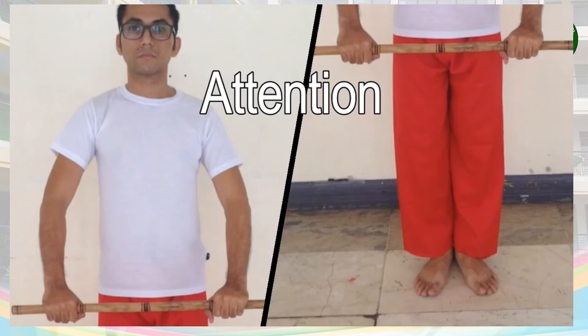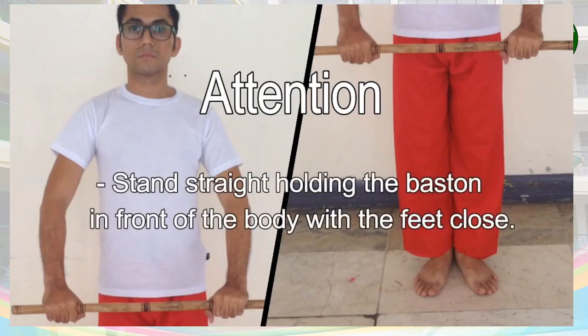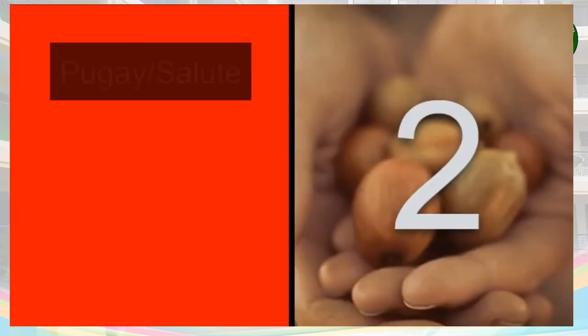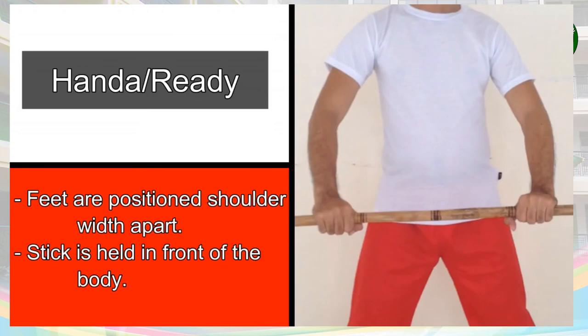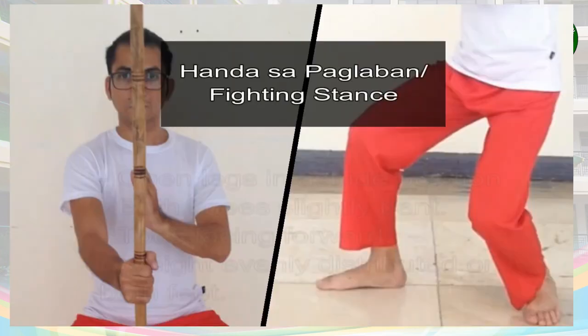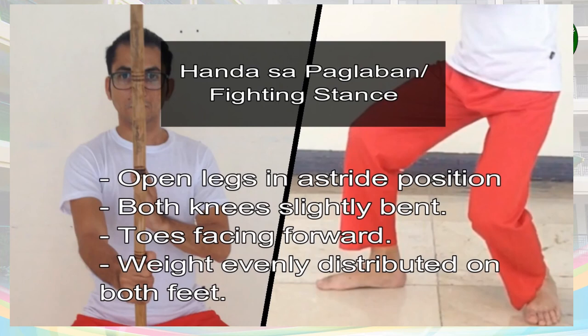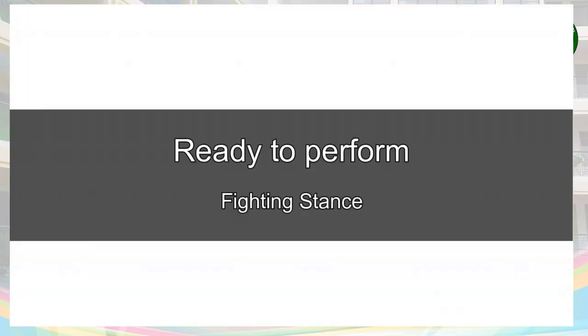Arnis basic stance demonstration. Attention — stand straight holding the baston in front of the body with feet closed. Pugay/salute — place the weapon hand across the chest. Handa/ready — feet are positioned shoulder-width apart and stick is held in front of the body. Fighting stance — open legs in a side position, both knees slightly bent, toes facing forward, weight evenly distributed on both feet.